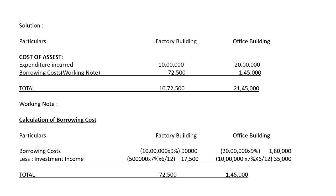For factory building investment income: 5 lakhs × 7% × 6/12. We take 6 months because the investment runs from 1st April to September, before the next installment begins. So 5 lakhs × 7% × 6/12 = Rs. 17,500. Deducting this from the borrowing cost of Rs. 90,000, you get Rs. 72,500 as the factory building net borrowing cost.